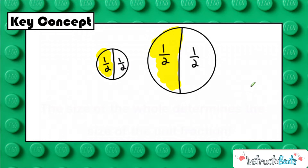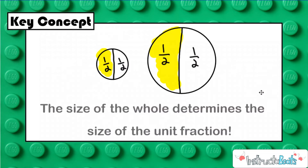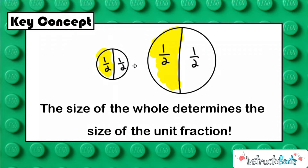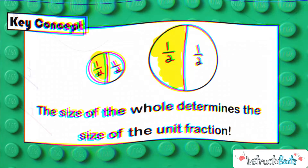I can see very clearly that if I ate one half of the small pizza, that's different from eating one half of the really big pizza. So our key concept today is: the size of the whole determines the size of the unit fraction. Here with the large pizza, when I split it into two equal parts, this half was larger than when I took the small pizza and split it into half. I'm representing the value with one half, but this one half is way bigger than that one half.